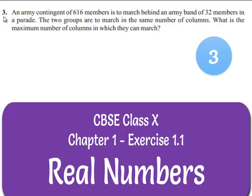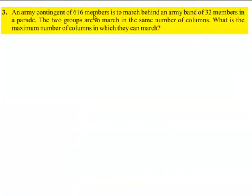Now let us move on to the third question. An army contingent of 616 members is to march behind an army band of 32 members in a parade. The two groups are to march in the same number of columns. What is the maximum number of columns in which they can march? So now let us move on to the solution.